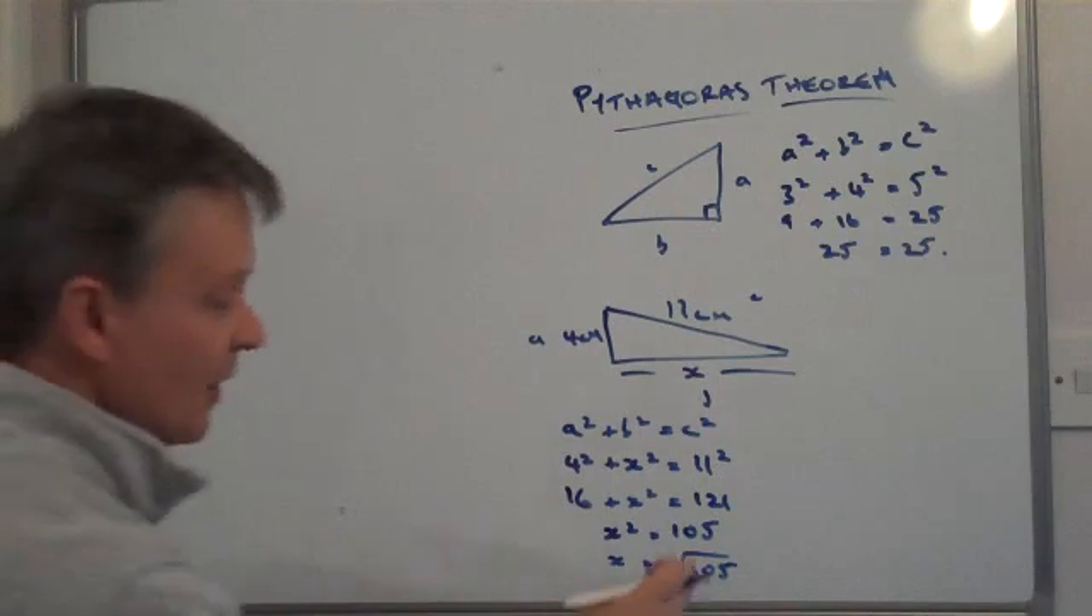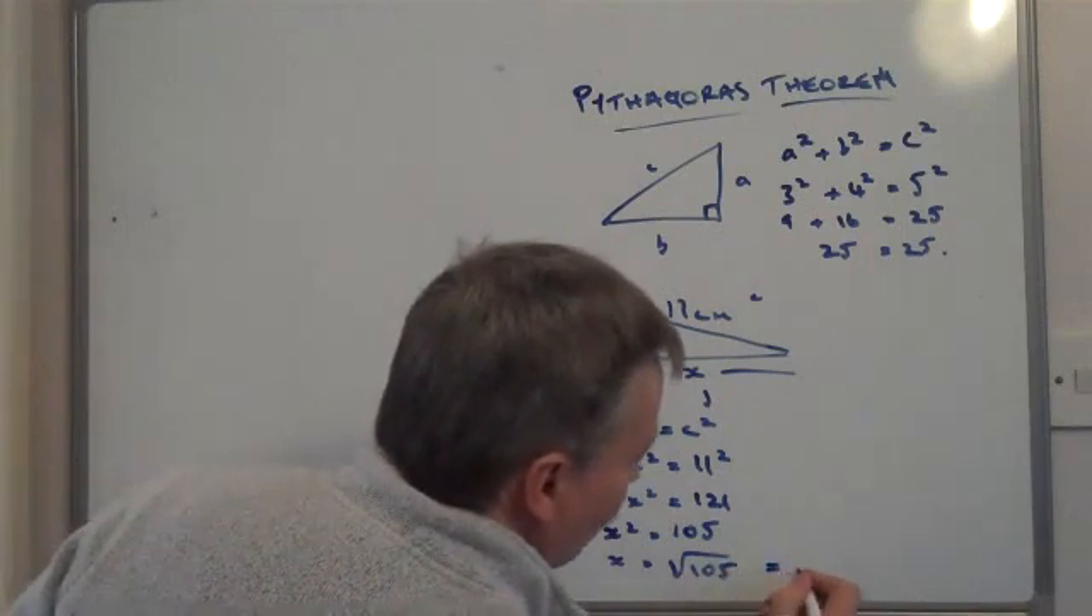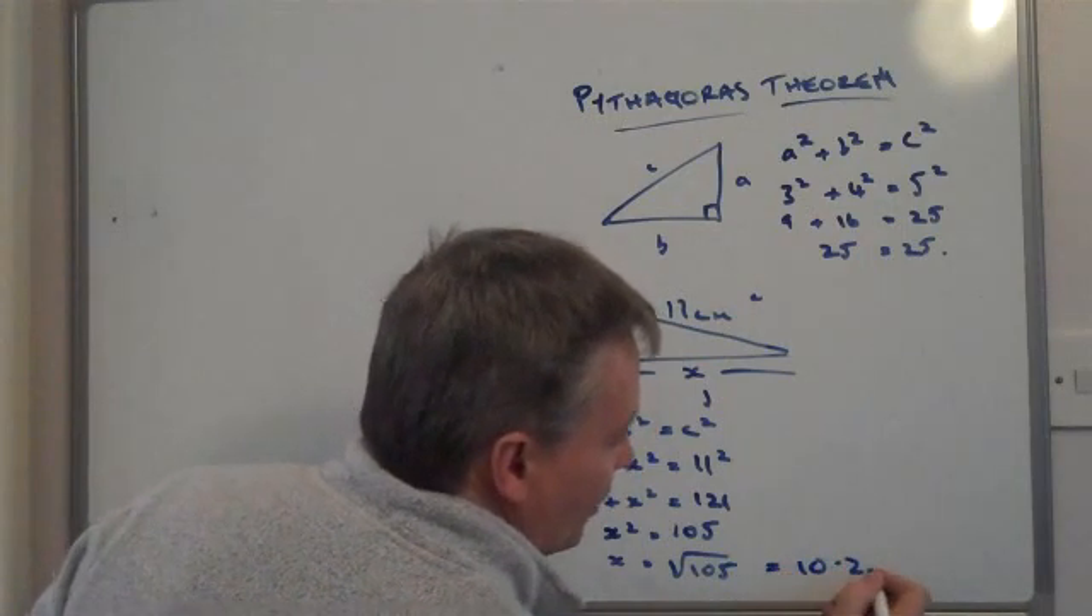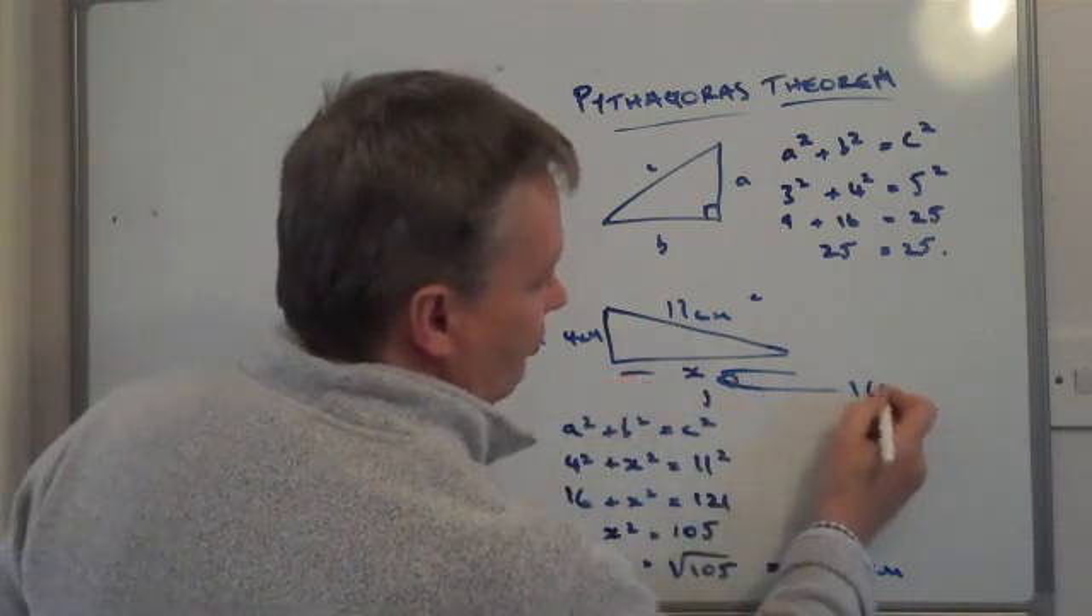So therefore, X equals the square root of 105, because I've got X squared there, so I'm going to square root that, which becomes X. I'm going to square root that side, which becomes the square root of 105. And the square root of 105 is around about 10.2 centimeters. So the value of X would be 10.2 centimeters.